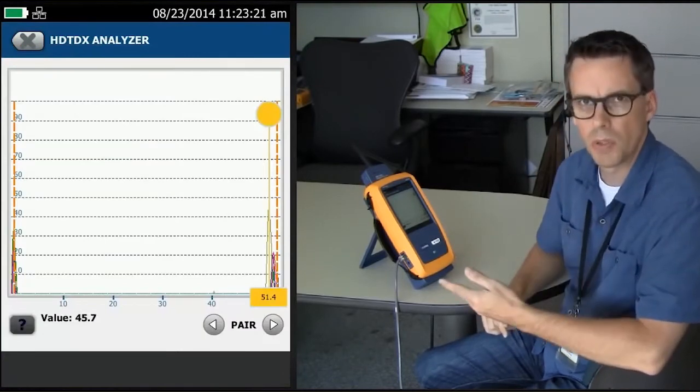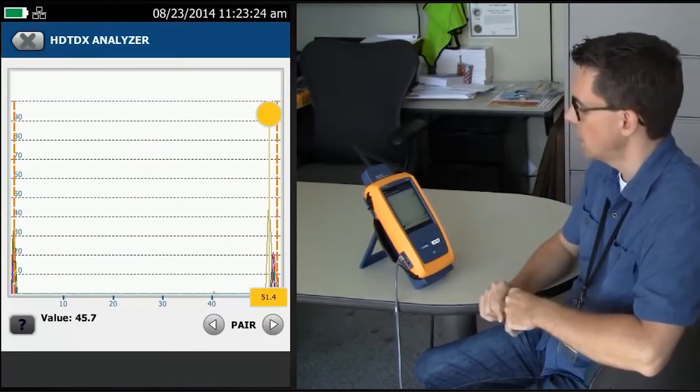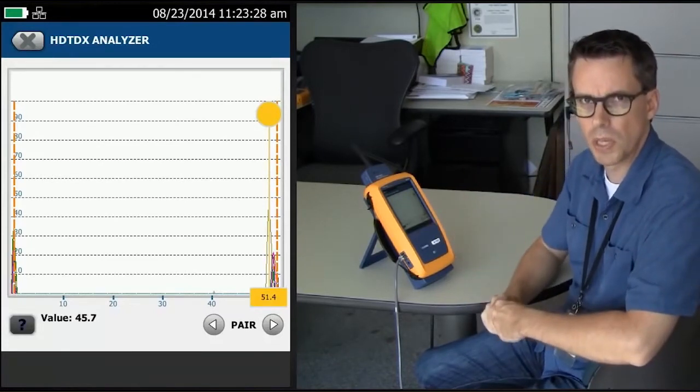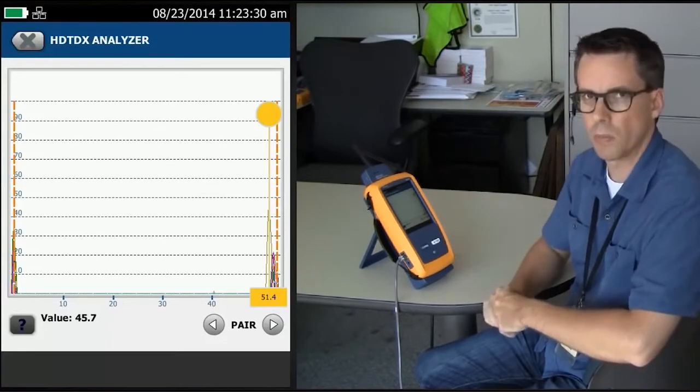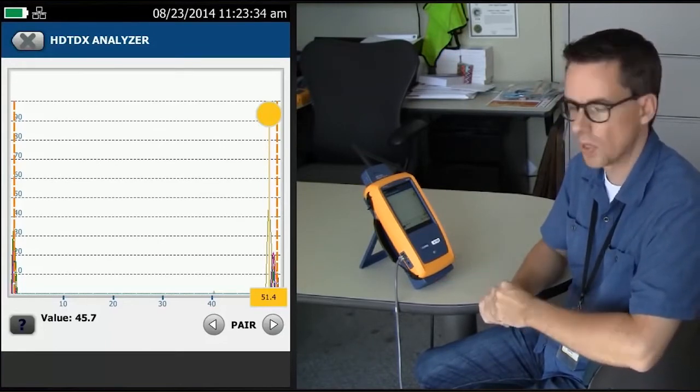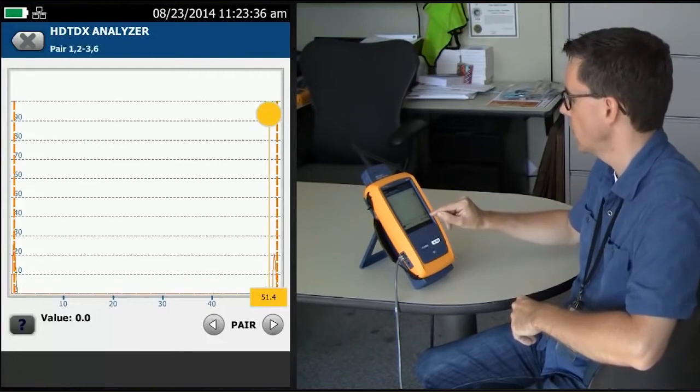You're immediately presented with a time domain plot. That is, the ability to actually look down the cable and see where the crosstalk is happening. And it's going to show all six pairs. We're only interested in that pair that causes the problem, which was the 3-6, 4-5.